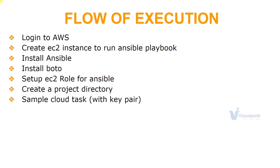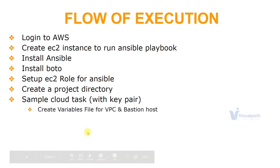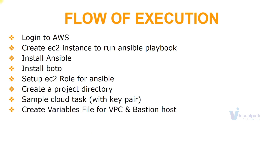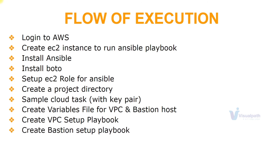We'll create a project directory on the EC2 instance and execute a sample task to create a key pair. If you've only used Ansible for system automation, cloud automation has some differences — you'll see those clearly during this sample task. We'll then create two variable files: one with VPC information and one with bastion host information, so we don't use static entries in the playbooks. Then we write the main playbook to set up the VPC stack — VPC, subnets, internet gateway, route tables — and another playbook to set up the bastion host in the public subnet with the right rules.